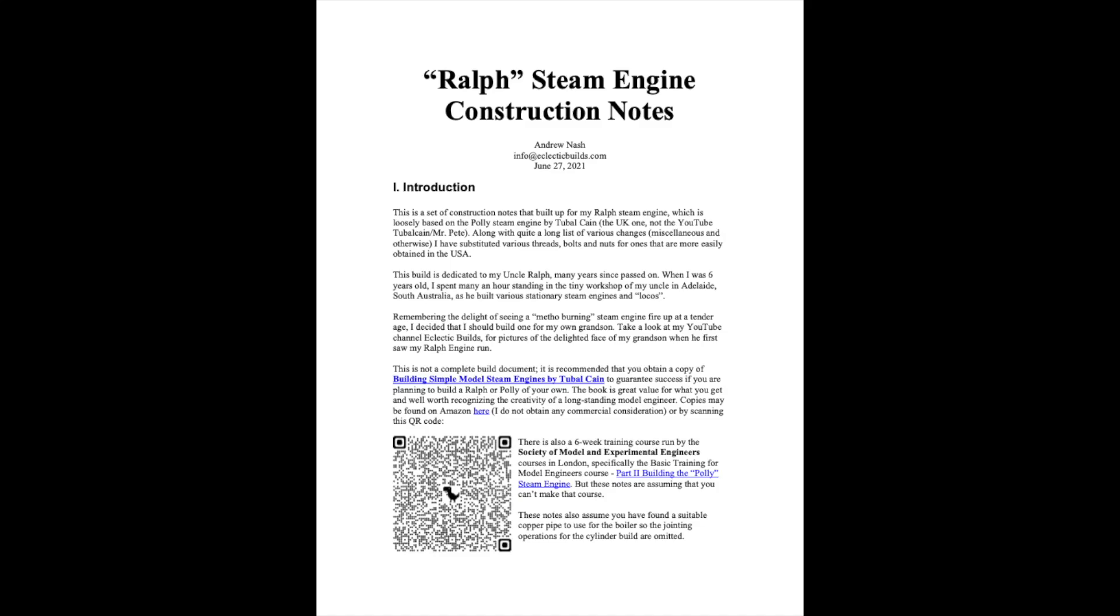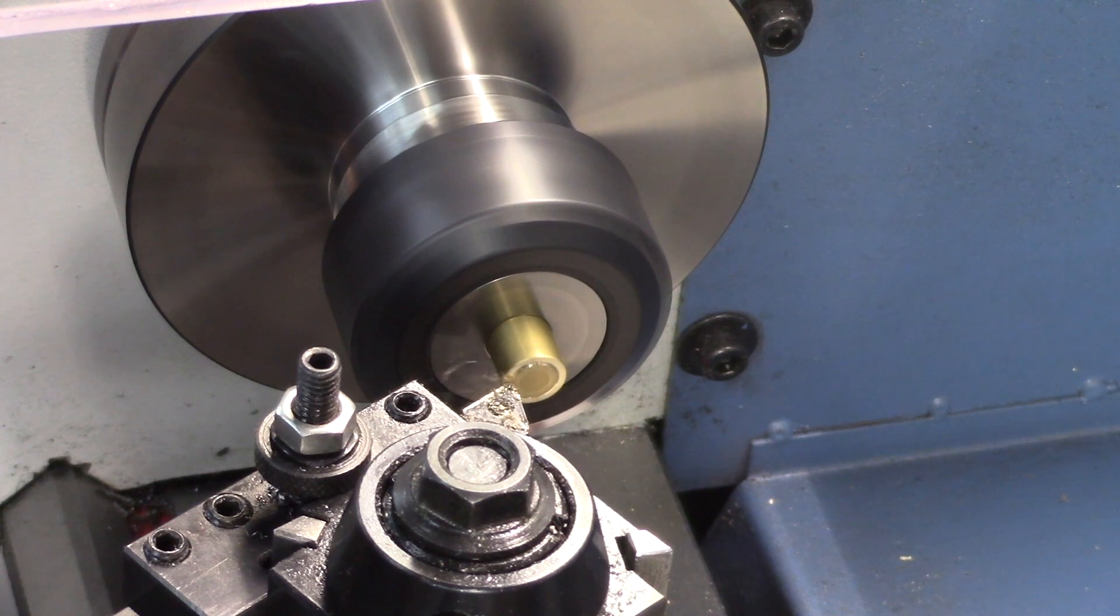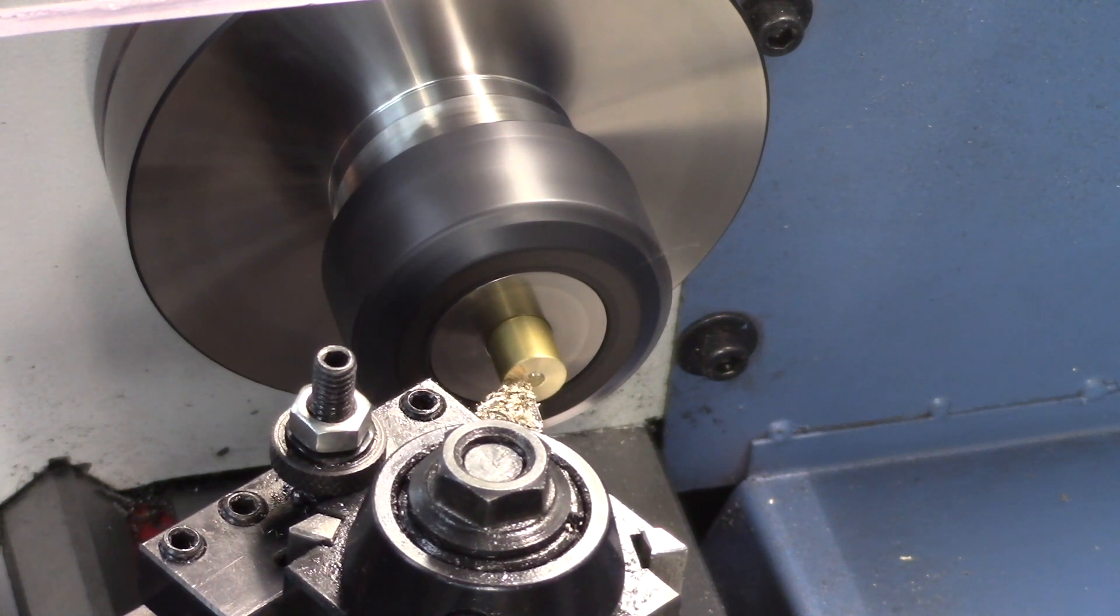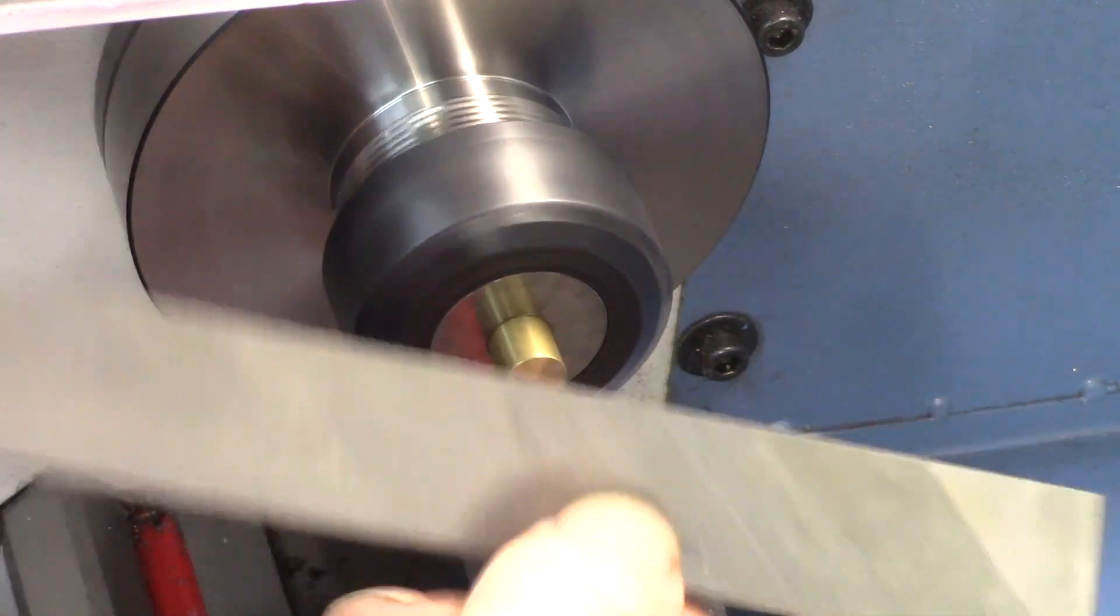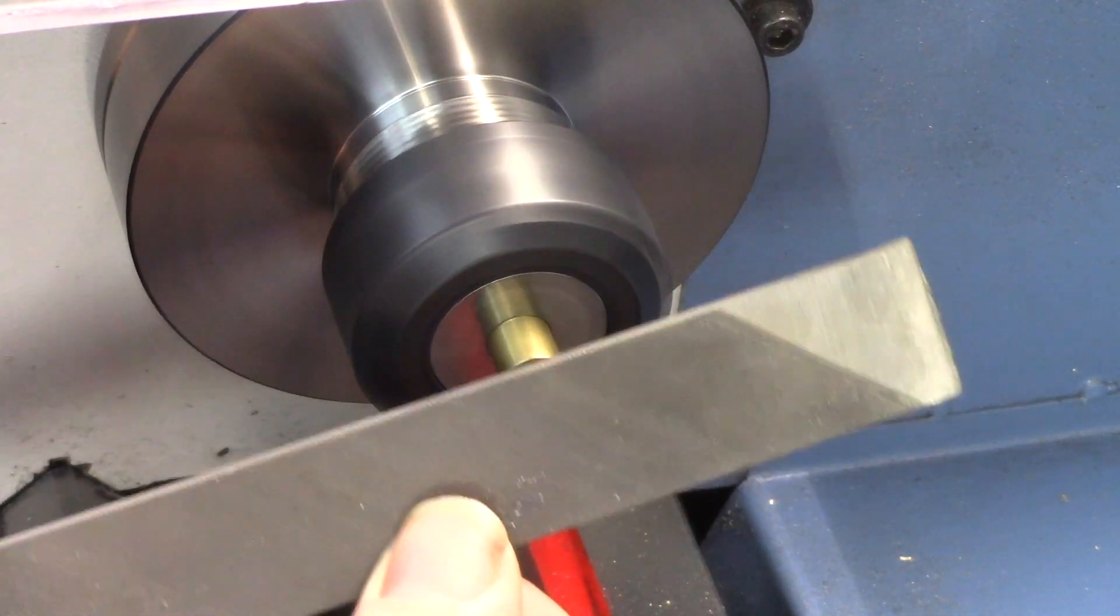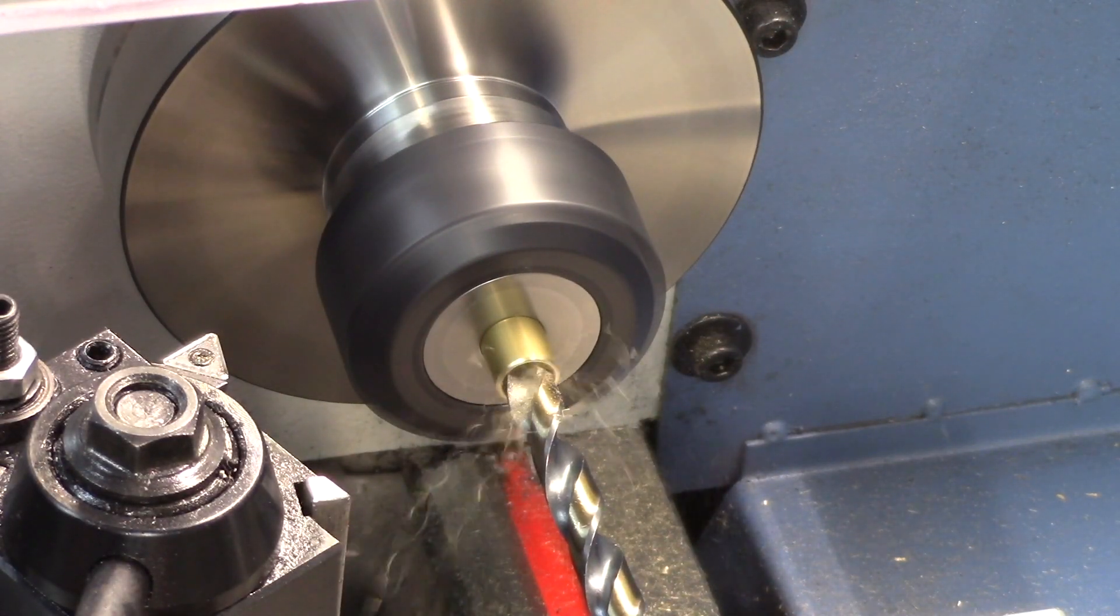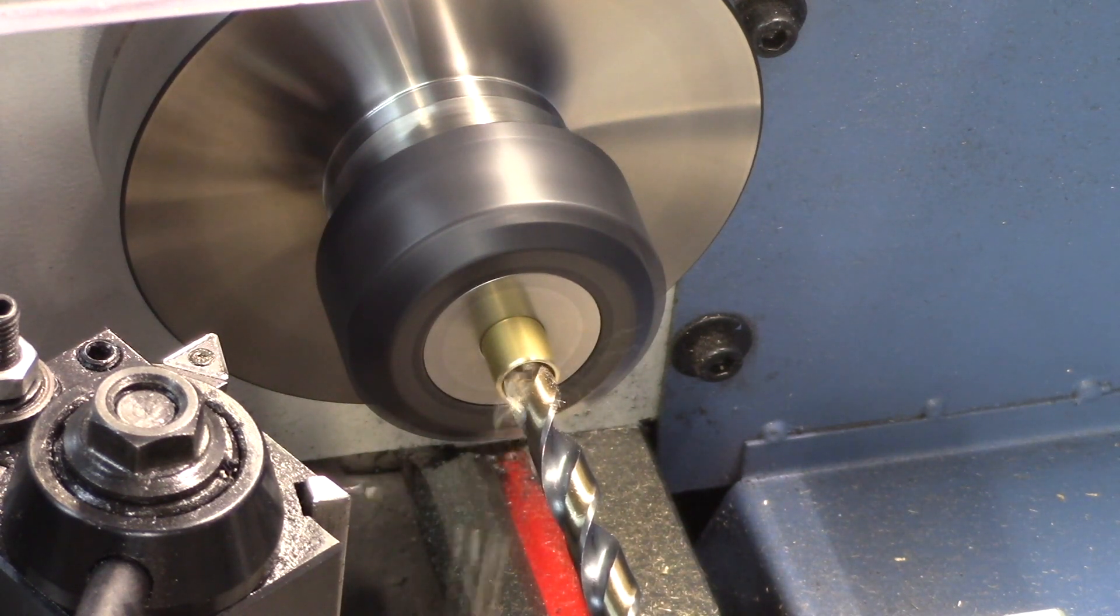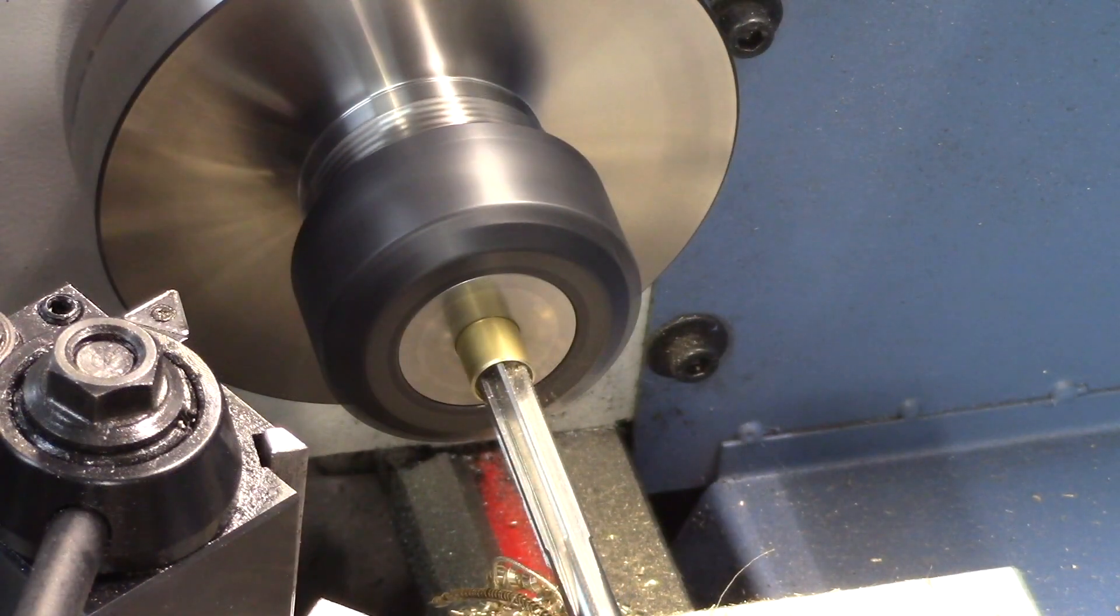To start, a block of round brass stock is faced for the cylinder. The cylinder bore is drilled out with a size letter M drill bit. The cylinder bore is then finished with a 5/16 inch reamer.